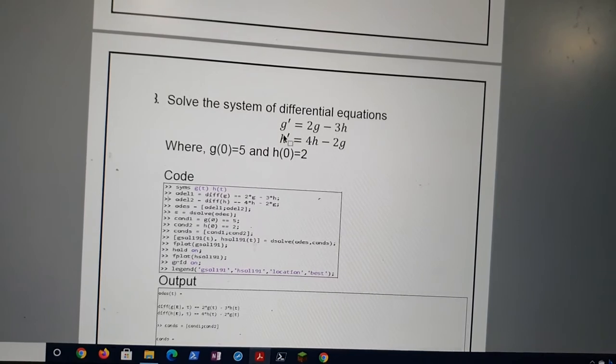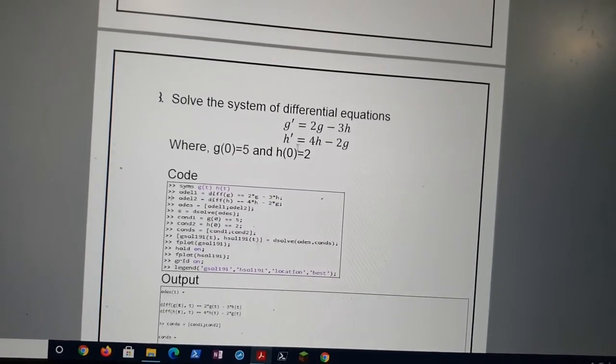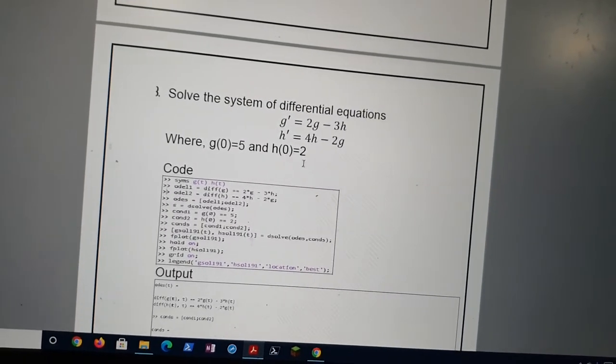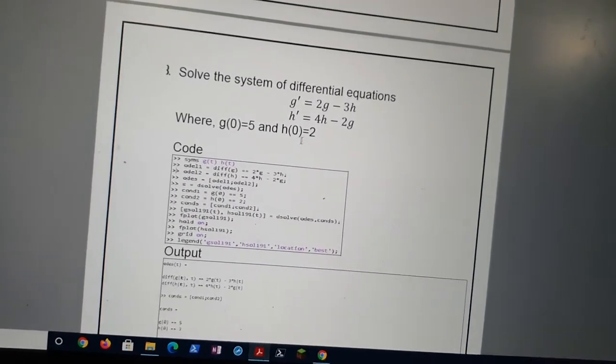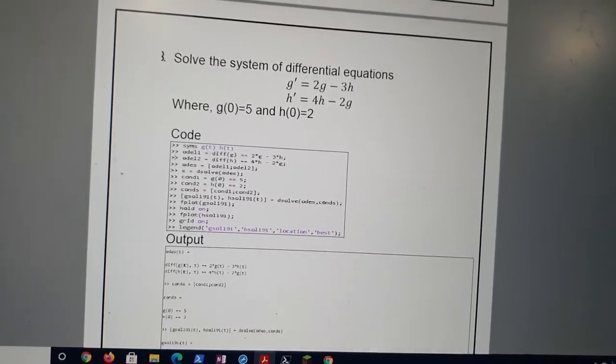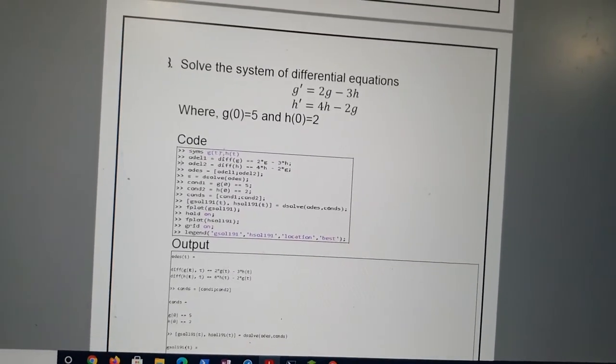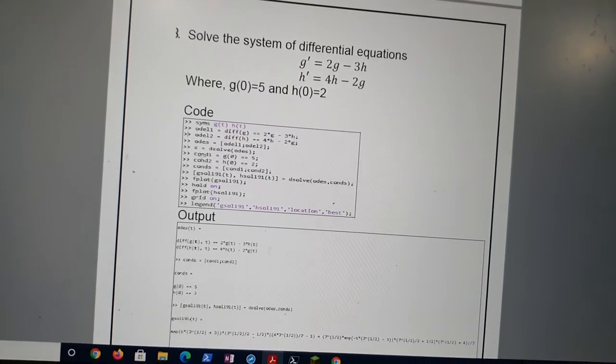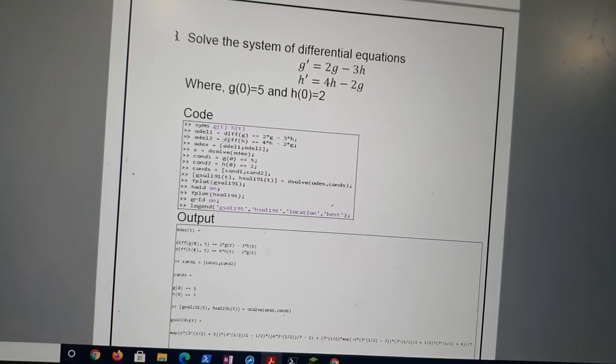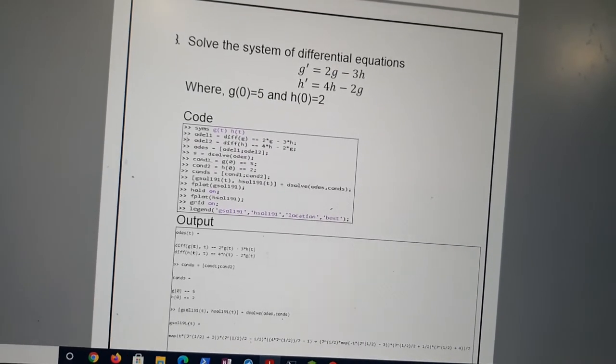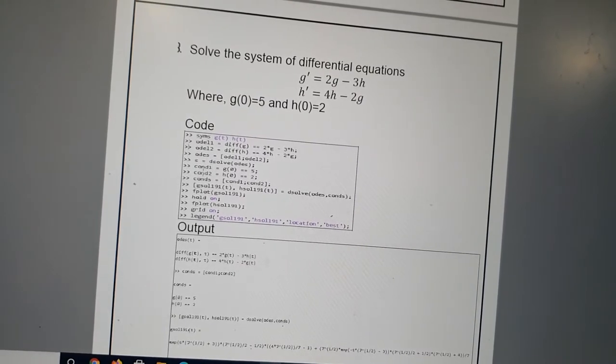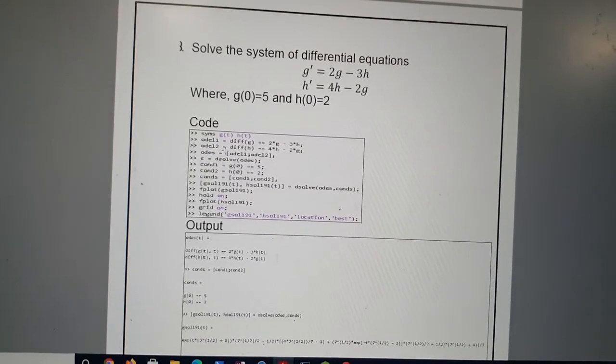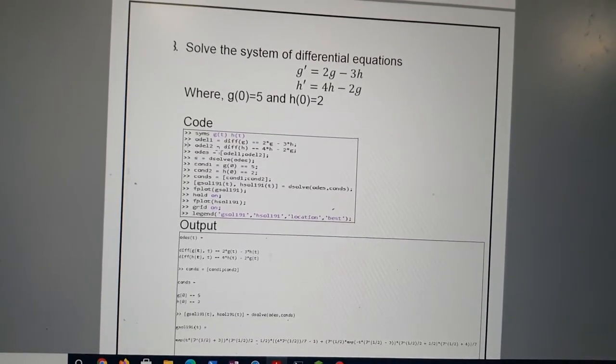In the next question we have G' = 2G - 3H and H' = 4H - 2G. And here they have given us G(0) = 5 and H(0) = 2. We have two definite given values here. So we will have to use the condition variable this time. We use syms for the two variables. Then we put the two questions. And then we use S = Dsolve to solve the variable. And here we use cond1 and cond2 because we have the conditions G(0) = 5 and H(0) = 2. Basically we are putting the condition over there.